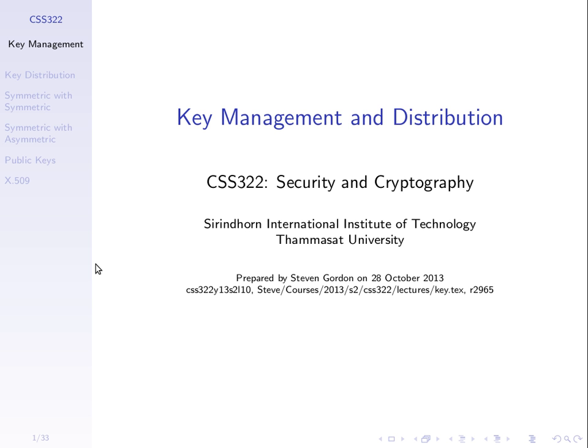We know from before the midterm how to encrypt data using two approaches: symmetric key encryption and public key encryption. With symmetric key encryption, we use the same key at both endpoints. In public key encryption, we have a pair of keys — we encrypt with one and decrypt with the other, for example encrypt with a public key and decrypt with a private key.